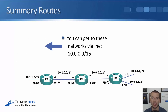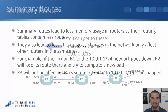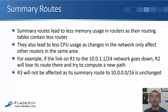Just like with static routes, we can use summary routes with dynamic routing protocols as well. In the same example, R2 learns about the 10.0.1.0/24 and 10.0.2.0/24 networks. Rather than advertising those two /24s to R3, we can configure it to send a summary route instead — advertising 10.0.0.0/16. Summary routes lead to less memory usage in routers as their routing tables contain fewer routes. In a small example this wouldn't make much difference, but it can make a big difference in really large networks. They also lead to less CPU usage, as changes in the network only affect other routers in the same area.